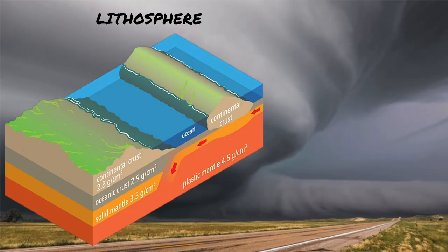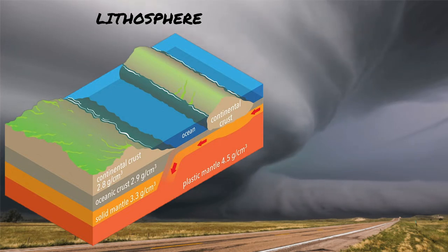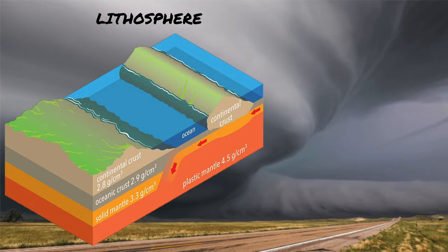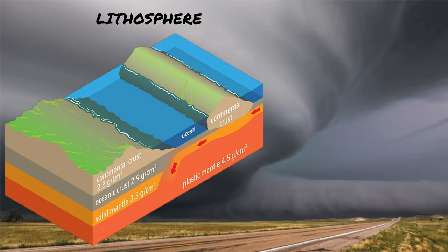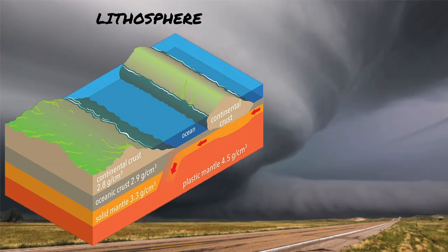The first one would be the lithosphere. This is the rigid outer layer of the Earth. This includes the plastic mantle, the solid mantle, the oceanic crust, and the continental crust. It also includes the crust and the upper portion of the mantle.